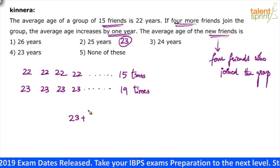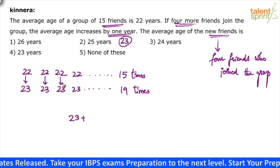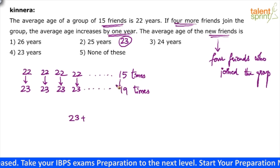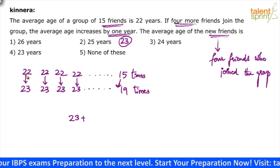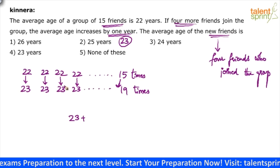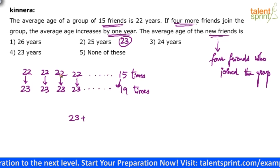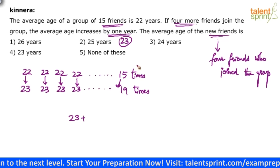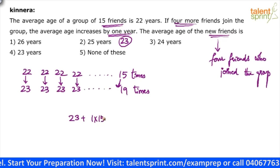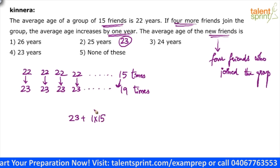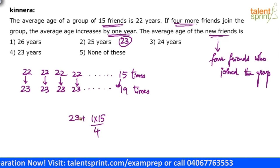Additionally, each of the original 15 values has been increased by one year — 22 has become 23, 15 times. So the total increment is 1 into 15, which equals 15. But this 15 years should be divided equally among the four new persons.